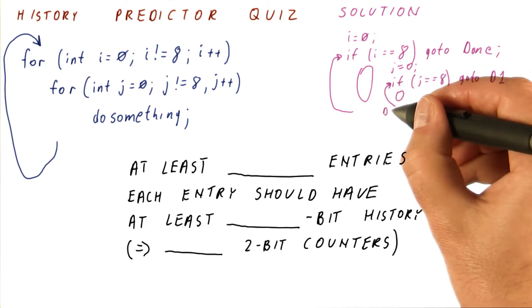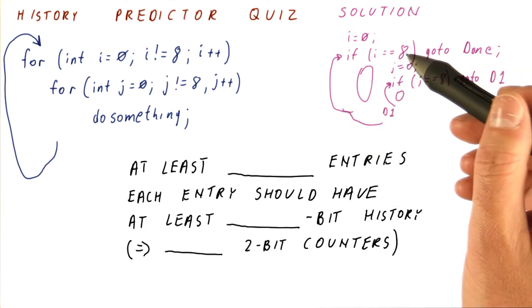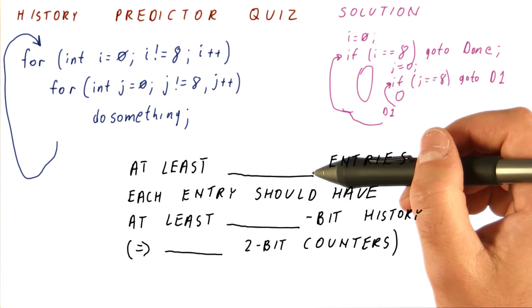And the label d1 would really be here, after which we are going like this. So how many entries do we need? We need at least one entry per branch.